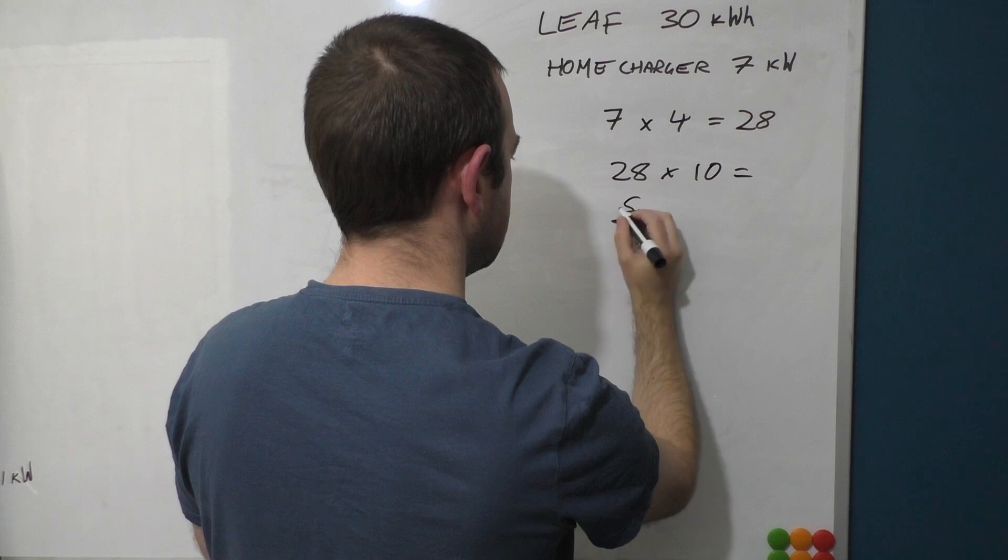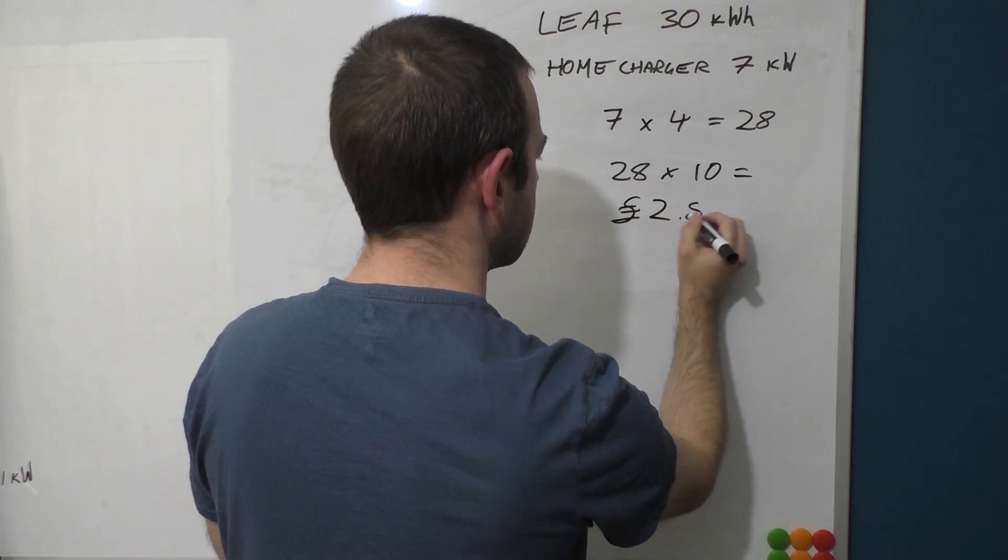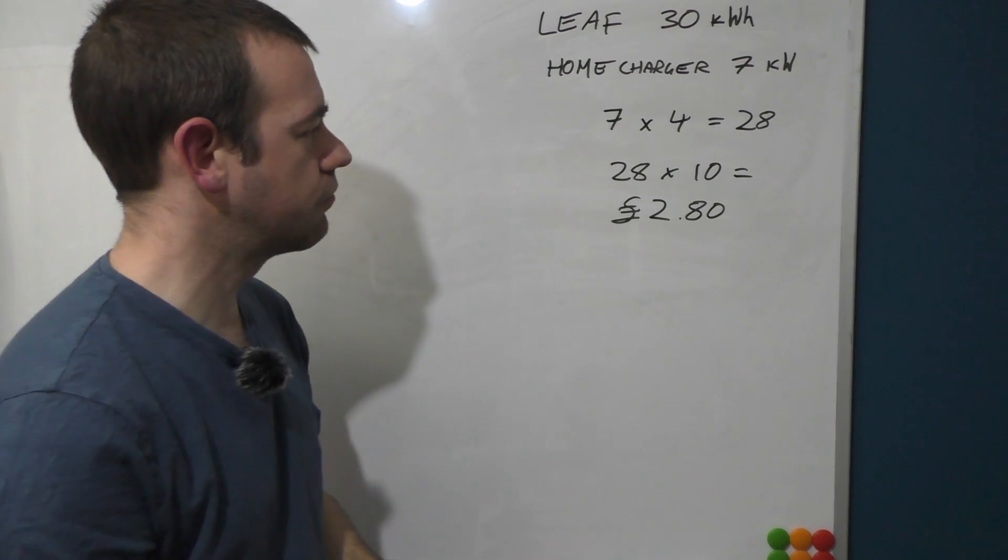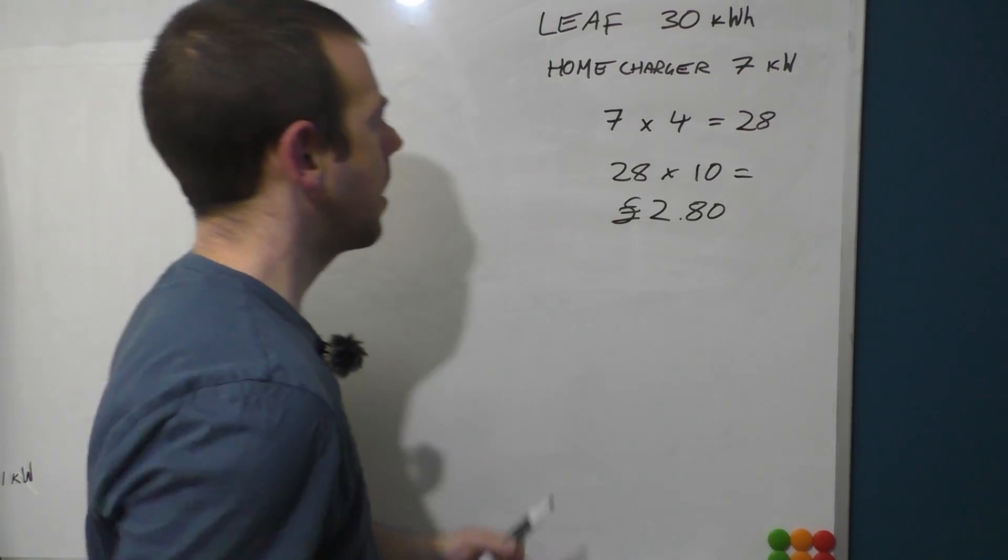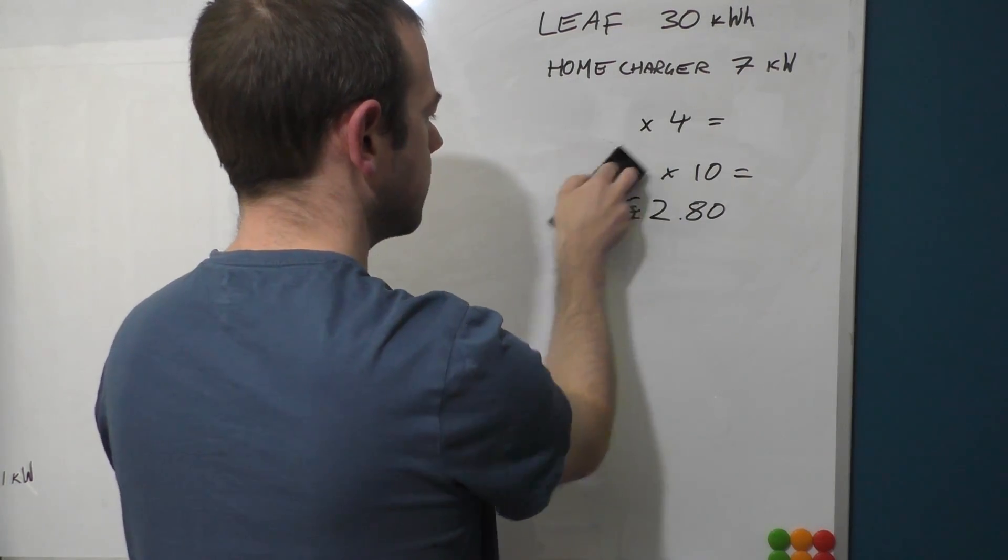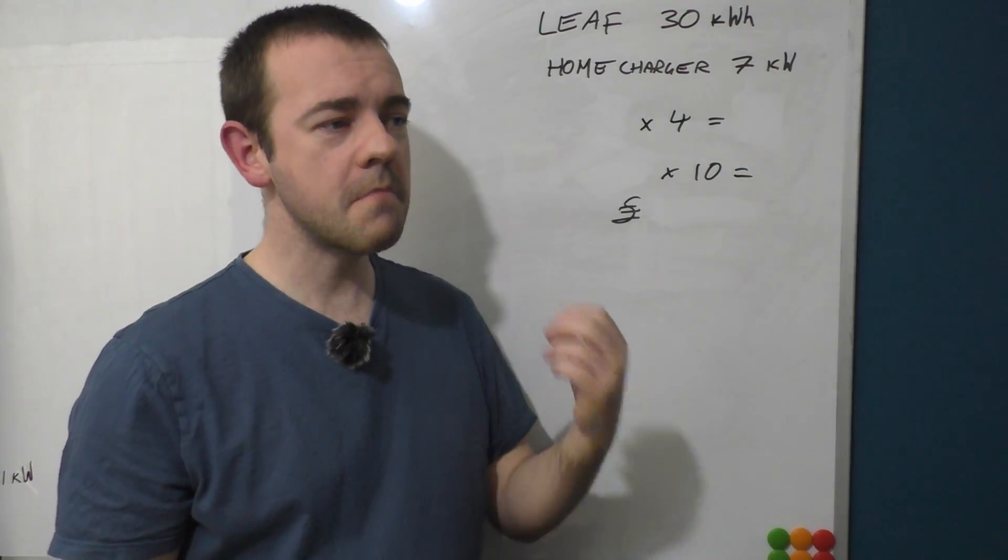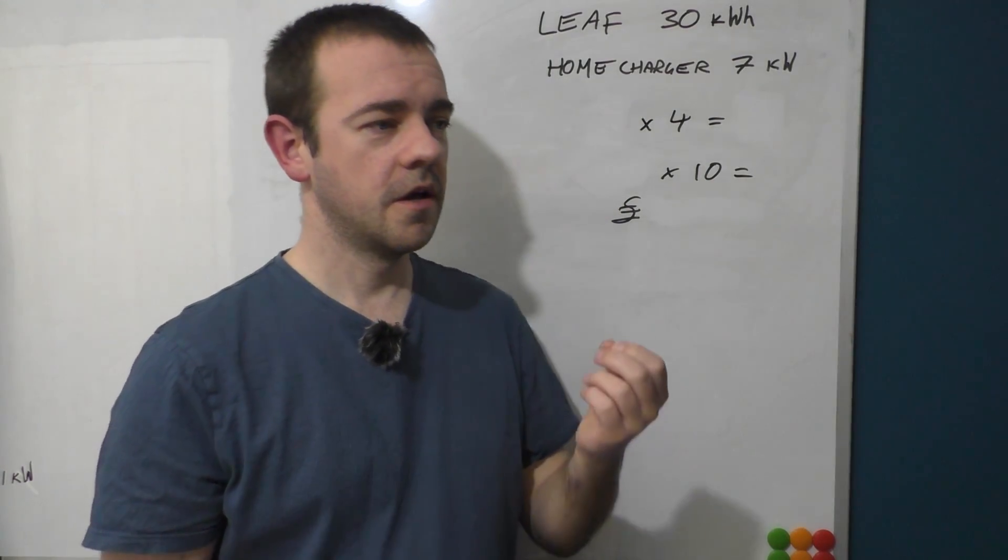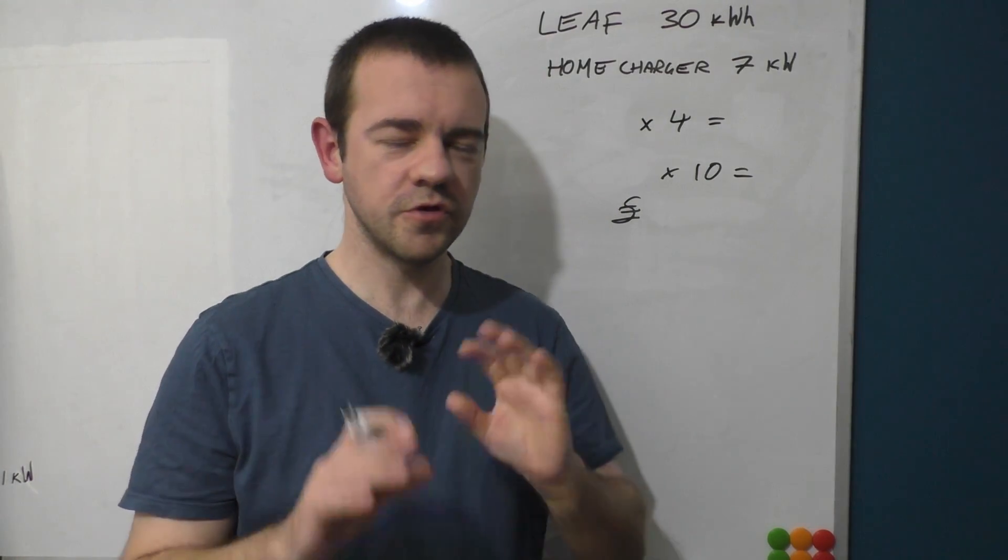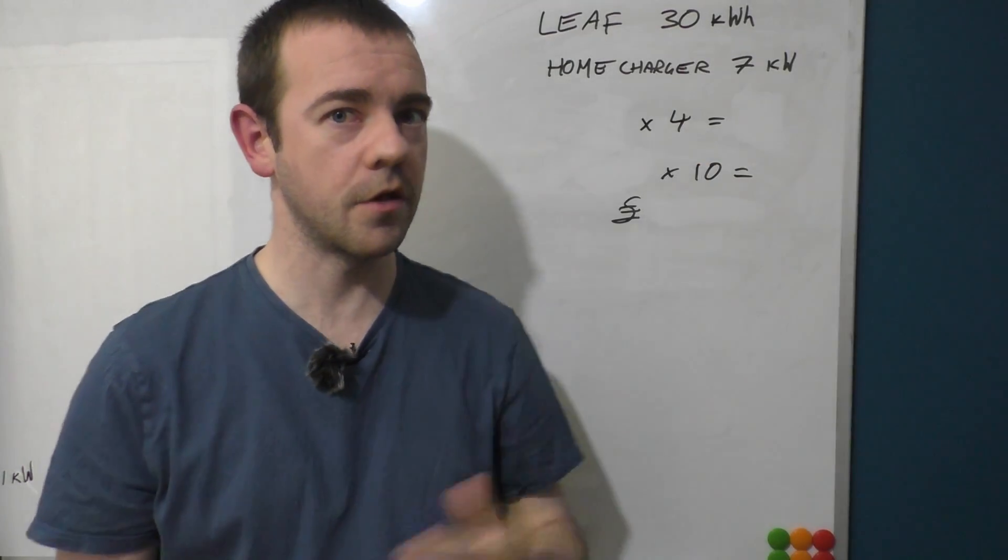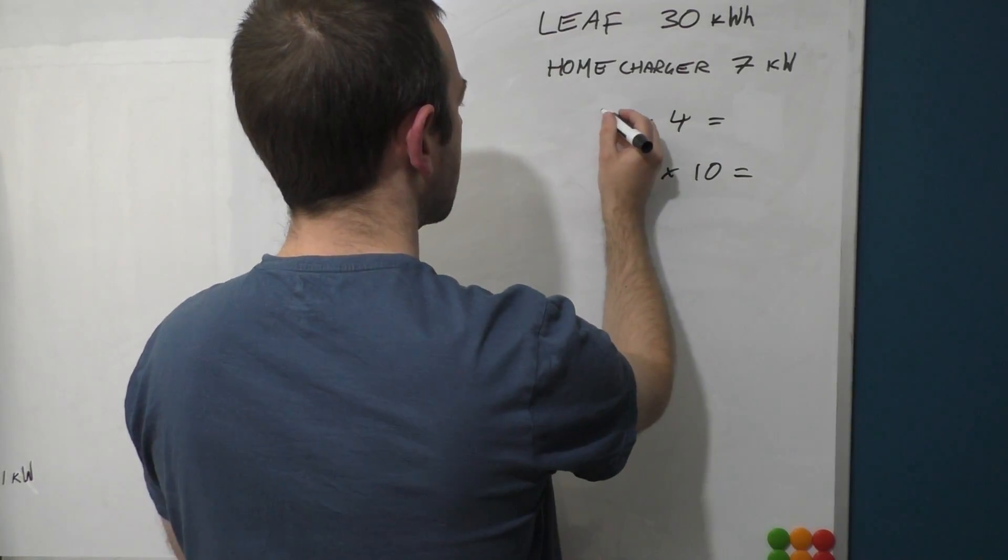So if you were on a rapid charger that runs a true, I don't know, let's take this out. Now on a rapid charger, the maximum you'll get into a 30 kilowatt-hour Leaf anyway is 50 kilowatts, but you will almost never attain that. But just for the sake of my argument, let's imagine it goes straight to 50 kilowatts and stays like that the whole time.